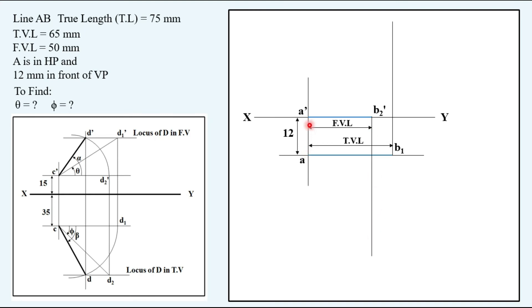Once you have drawn the projectors, then you keep the compass at front view point with radius as 75 mm that is the true length given to us. Cut an arc and join it.